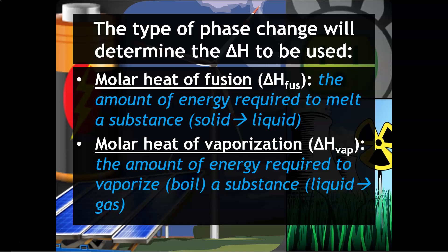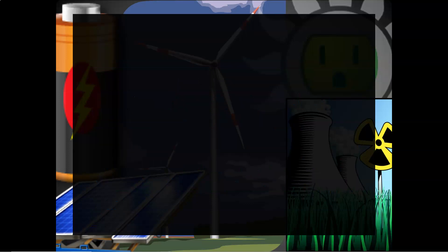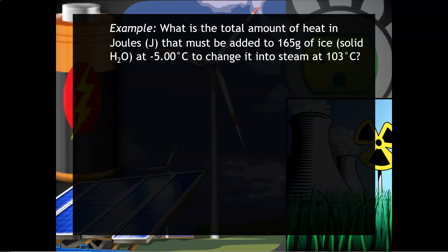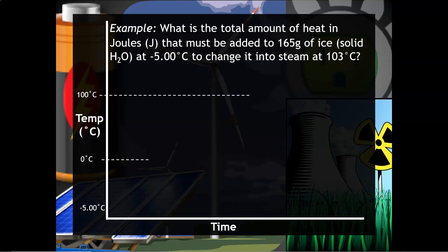Here is our example: we have 165 grams of ice starting at negative 5 degrees Celsius that turns into steam at 103 degrees Celsius. We want to provide a graph — a visual representation of what's going on — and then do the calculations. The first thing to identify is the important temperatures between negative 5 and 103 degrees Celsius, which are the phase change temperatures: 0 degrees Celsius and 100 degrees Celsius.